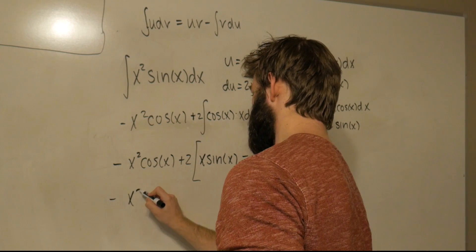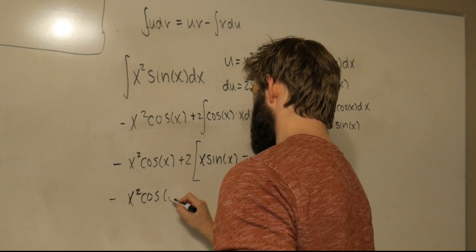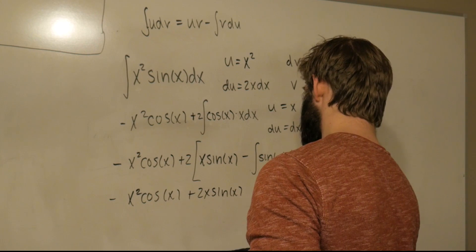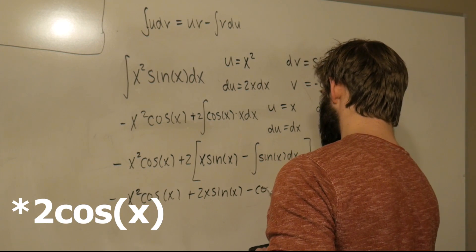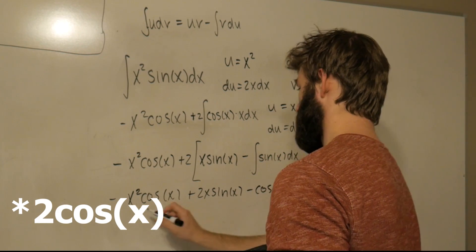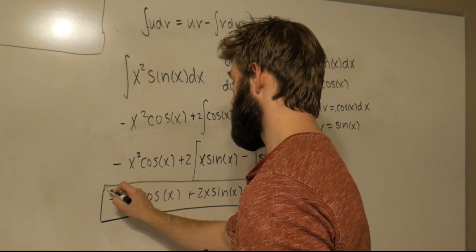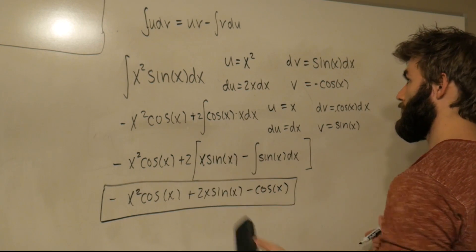Once all the dust settles, this gives us -x² cos(x) + 2x sin(x) - cos(x). There we have it. After using integration by parts two times, we finally have the answer. And actually...